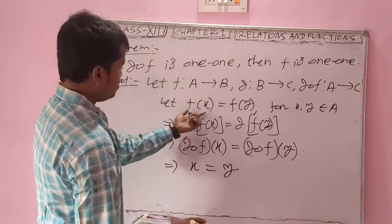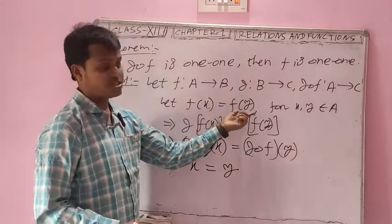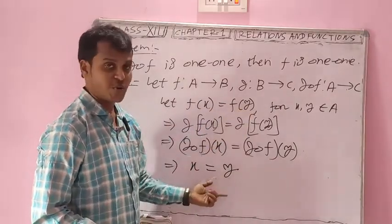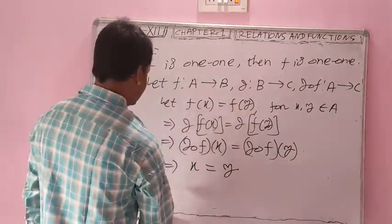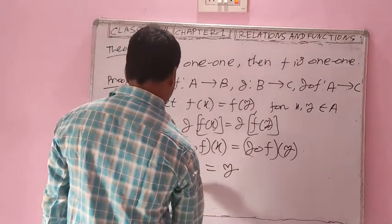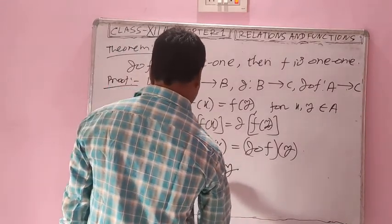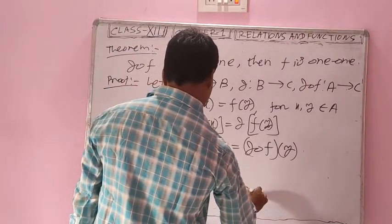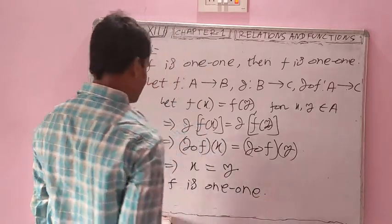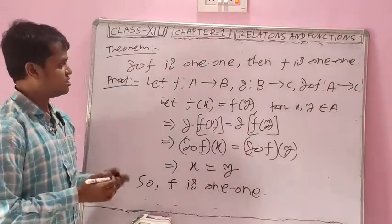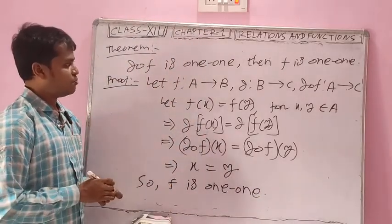We assumed f(x) = f(y) and proved x = y. Therefore the function f is one-one. This is the proof.